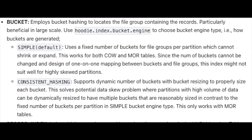Bucket Index with Consistent Hashing is an advanced version of Bucket Index. While the regular Bucket Index needs pre-allocation of file groups per partition, with Consistent Hashing Index we can dynamically grow or shrink the file groups per partition based on the load. This is available in the non-global category.